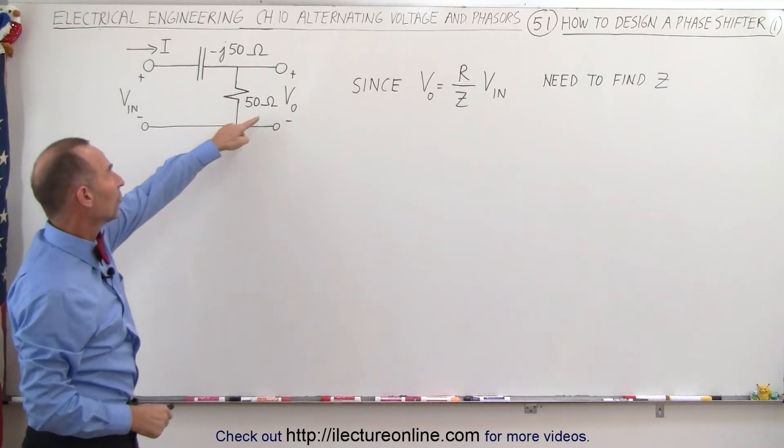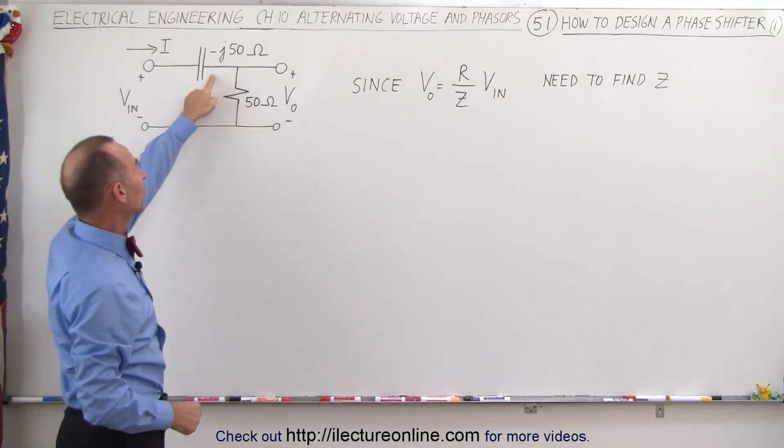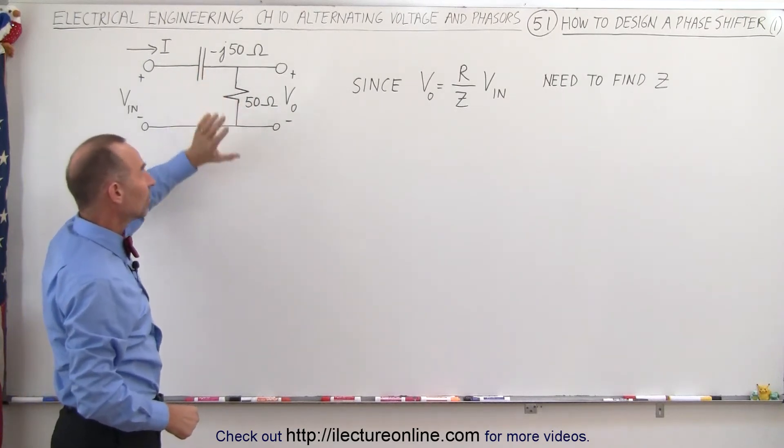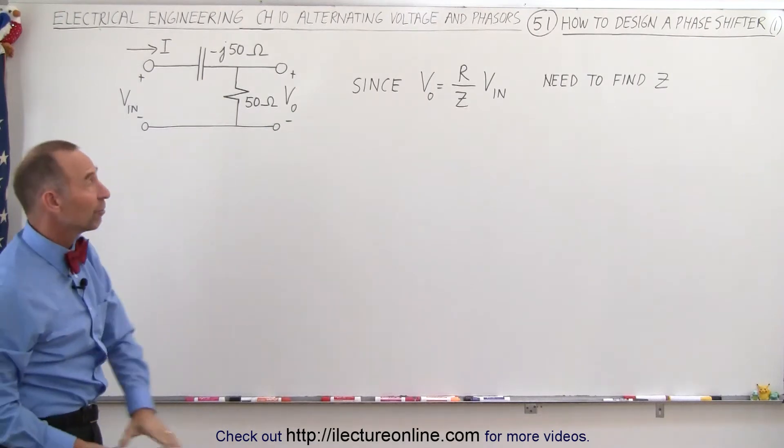But designing it like this, where the value of the resistance is equal to the value of the reactance of the capacitor, then we'll have a phase difference of 45 degrees.